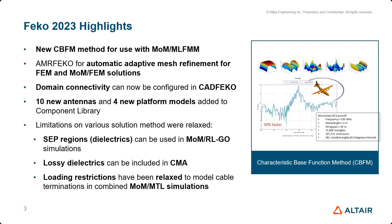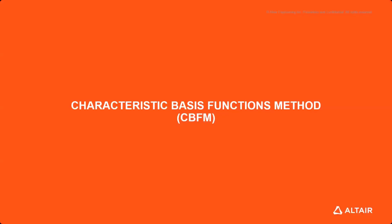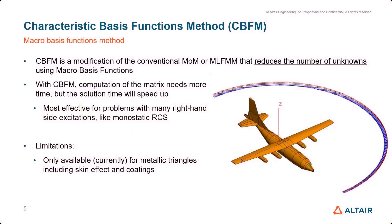Now let's get into the topic for today, which is the Characteristic Basis Function Method — in short, CBFM. CBFM is also called a Macro Basis Function Method. It is a modification of the conventional Method of Moments or MLFM solution that reduces the overall number of unknowns by using Macro Basis Functions. Less unknowns means less memory and less time. Because of the way characteristic basis functions are formed, the matrix formation needs more time; however, the overall problem size will be reduced, which speeds up the solution time.